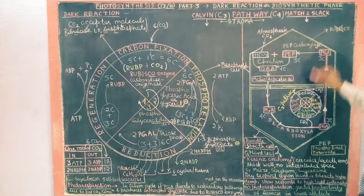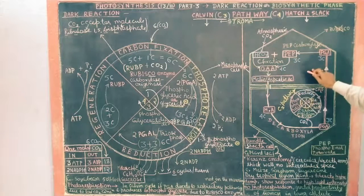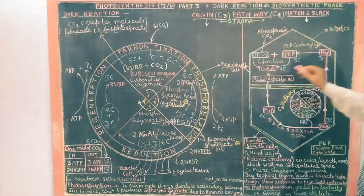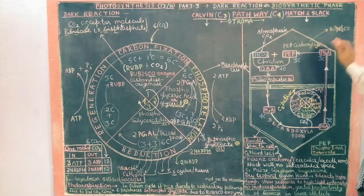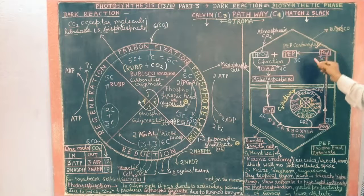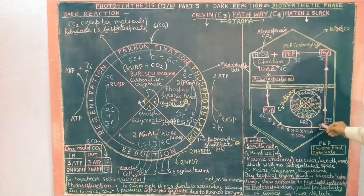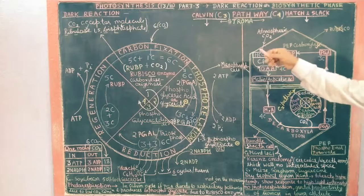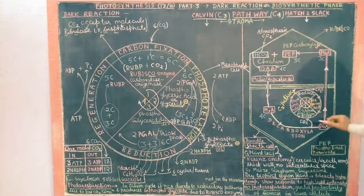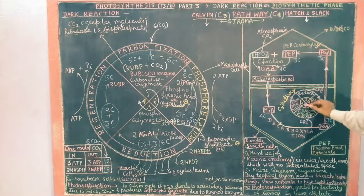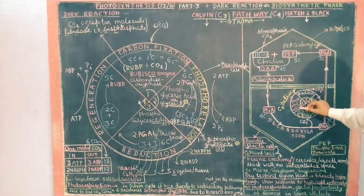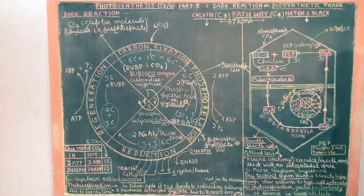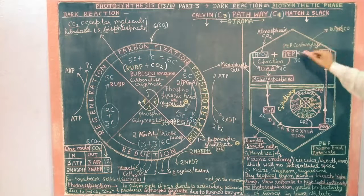And this part, rubisco is not here. Calvin cycle does perform here, this means it doesn't have rubisco enzyme. There is only PEP carboxylase. And this rubisco enzyme is in bundle sheath. This is four stages: one carbon fixation, then phosphorylation, then reduction, and next regeneration. So this cycle is complete.